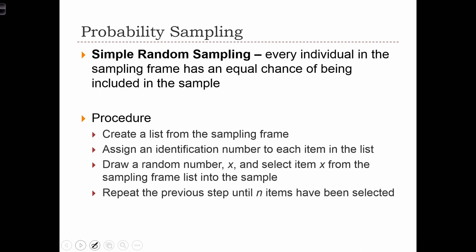Simple random sampling is a sampling procedure in which every individual in the sampling frame has an equal chance of being included in the sample.